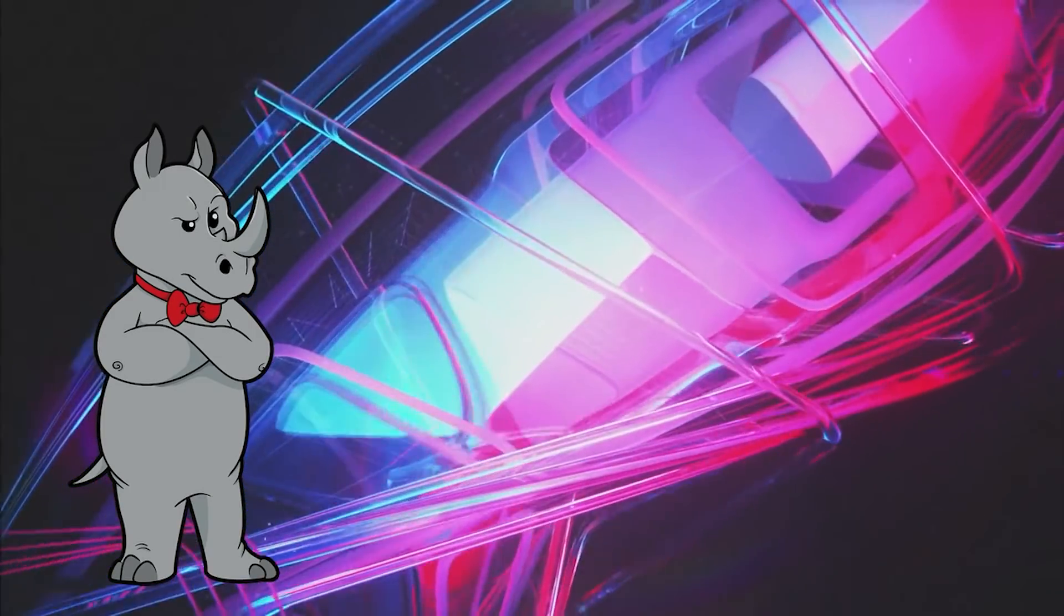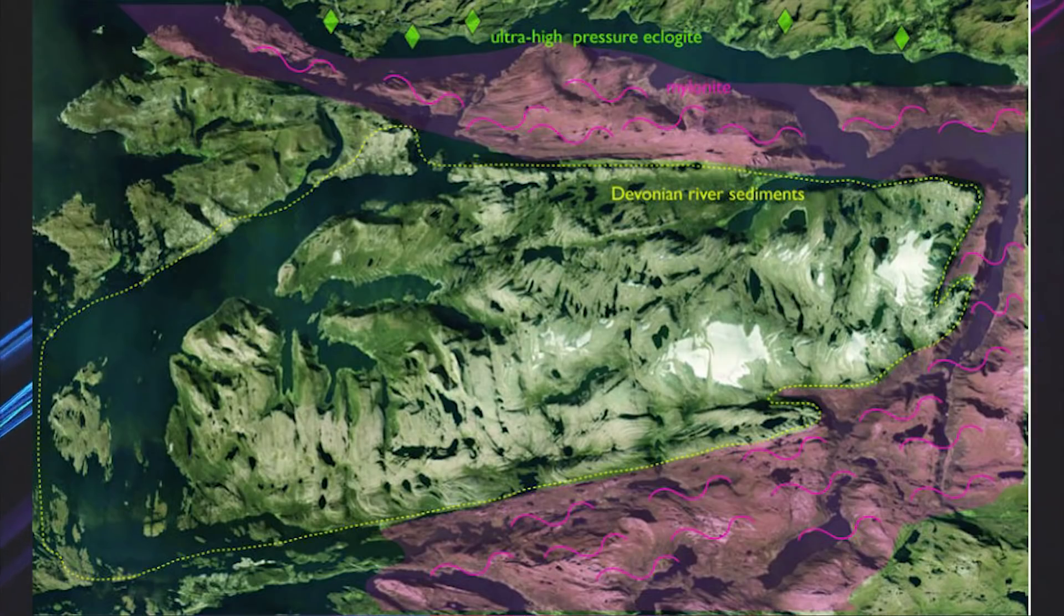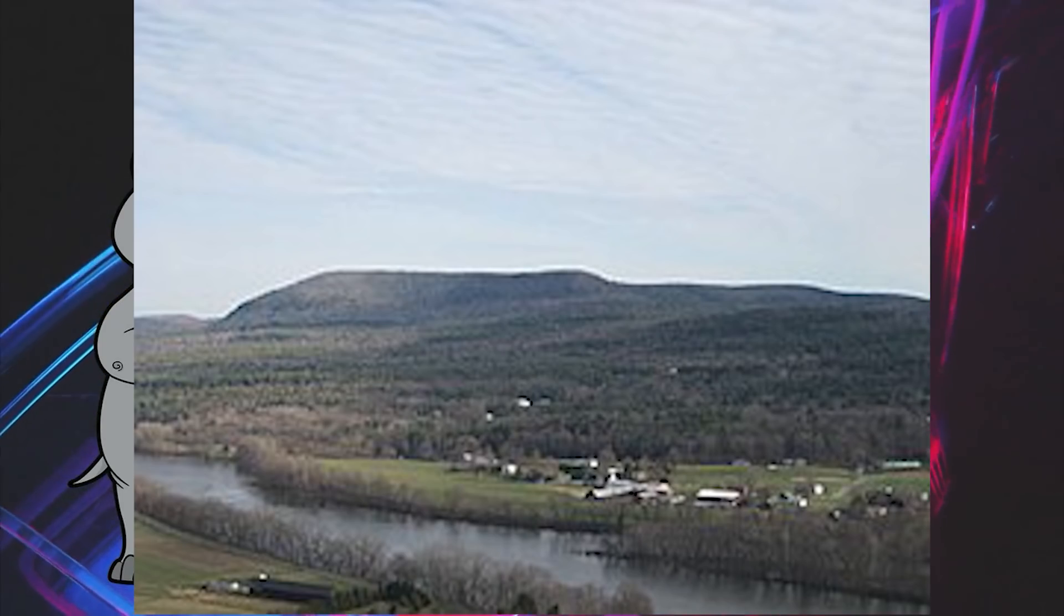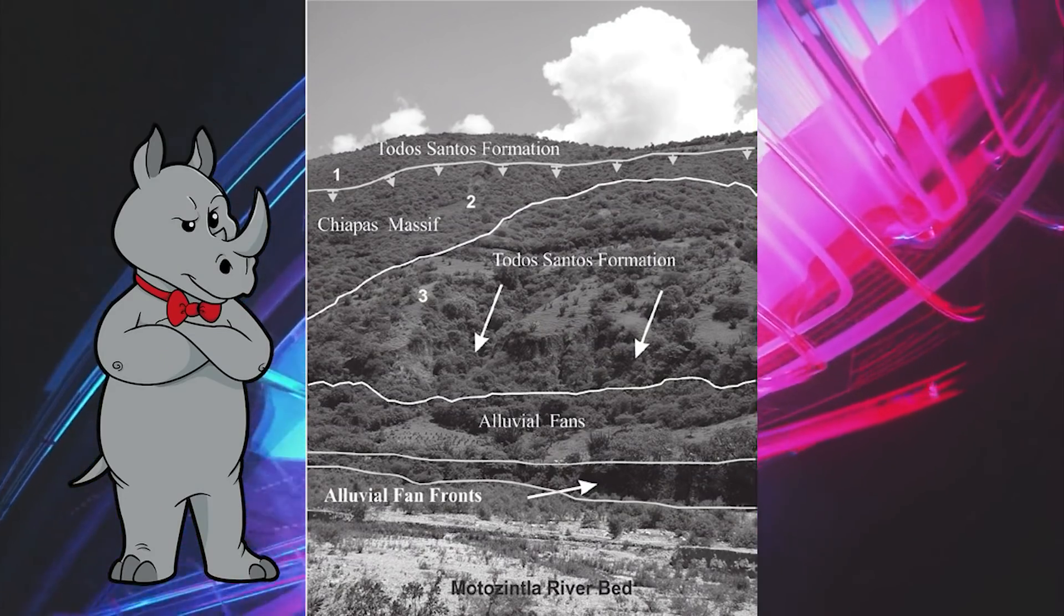Some examples of ancient alluvial fans include the Hornellan Basin of Norway, the Gas Bay Peninsula in Canada, the Mount Toby conglomerate in Massachusetts, and the Todos Santos Formation in New Mexico.